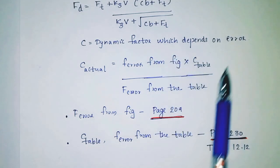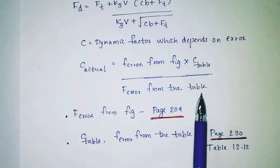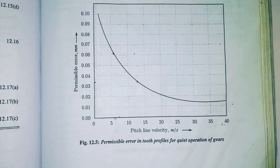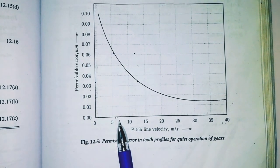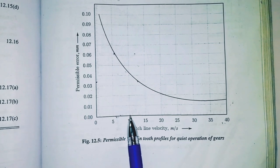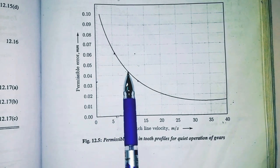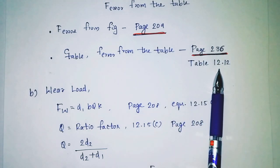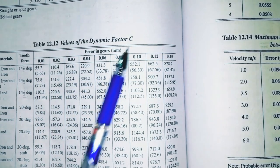C is a dynamic factor which depends on error. C actual equals f error from figure into c table divided by fr from the table. F error from figure can be found from page number 24, figure 12.14. The x-axis is pitch line velocity and y-axis is permissible error.